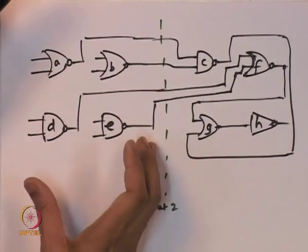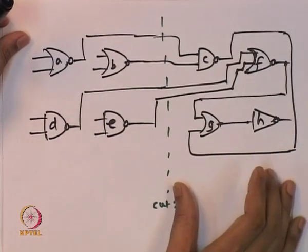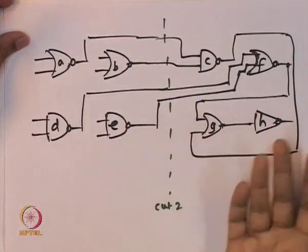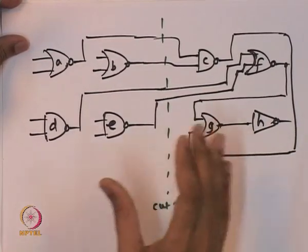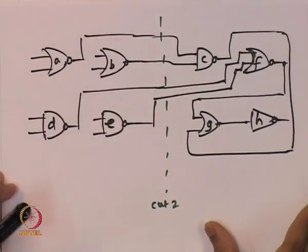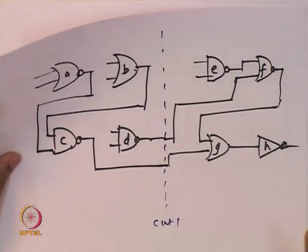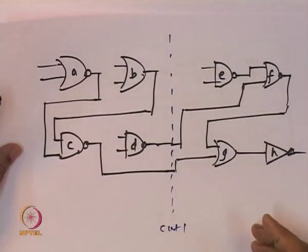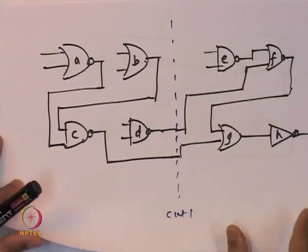As shown in this example, there are several choices; cut 1 is clearly better than cut 2. The algorithmic problem is how to identify the best or nearly best choice of how to partition. To design an algorithm, one must use abstractions like graphs and hypergraphs for modeling netlists.